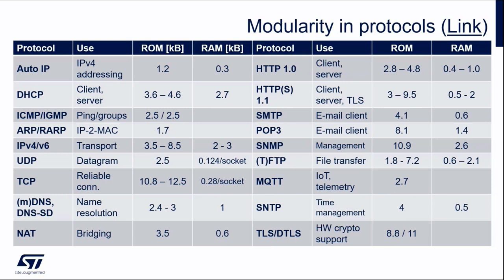This auto-assigned IP address is used only as a recovery mechanism. When the DHCP server comes back online, AutoIP stops and the real IP address is obtained from the server. DHCP server and client are both supported. You can also see flash and RAM usage columns in the table. ICMP and IGMP are supported — control message protocol versus group message protocol — for ping and multicast. ARP and RARP are supported, meaning IP-to-MAC and MAC-to-IP conversion.